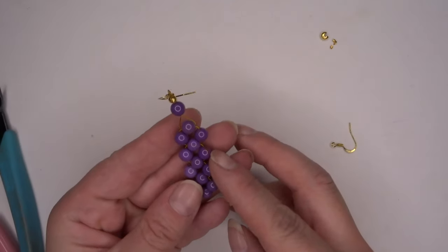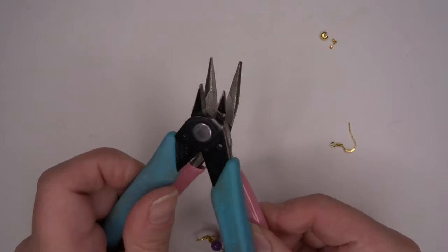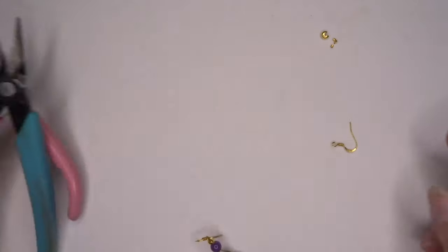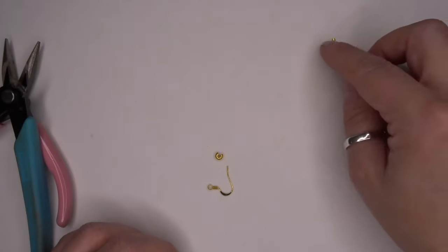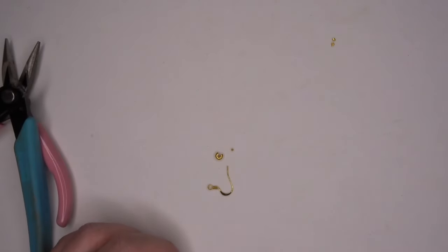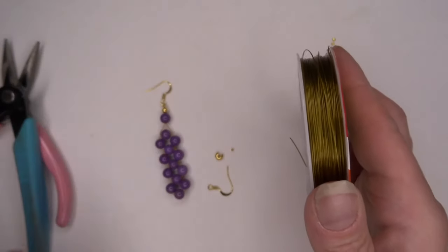In order to make these earrings, you're going to need some flat nose pliers, some flush cutters, a shepherd hook, a crimp cover, crimp bead, and some beading thread, as well as your gemstones. So let's get started.